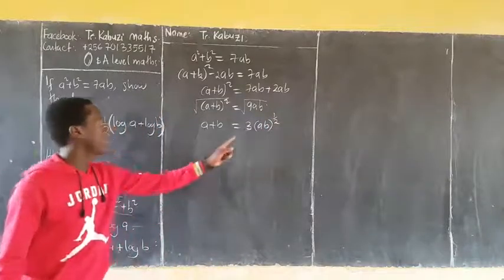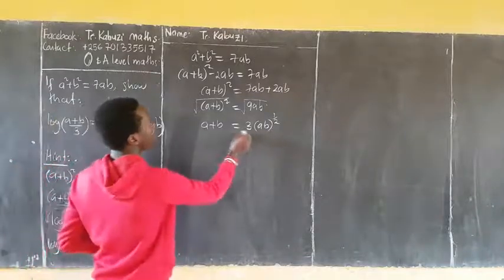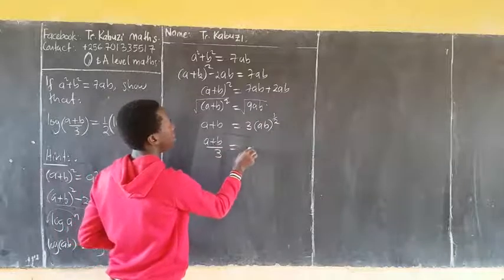So I am dividing both sides by 3. I have (a+b)/3 equaling to (ab)^(1/2).